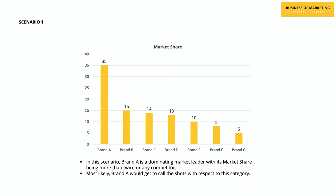Once you see that, it will be pretty obvious as to why you need to understand this concept. In the first scenario, there are seven different brands in this category, and brand A is a dominating market leader which has a market share of more than twice that of any other competitor in the market. Looking at this chart, it would not be wrong to guess that brand A is probably calling the shots as far as this category is concerned.